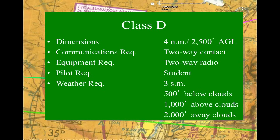The tower frequency will be on the chart and on various resources with airport information. Of course, to make contact you need a two-way radio on board. The pilot requirement for Class D is minimal — at minimum you need to be a student pilot. There are no major restrictions on pilot type, though as a student you would need to be signed off by your instructor to go to that airport if it's not your home base.